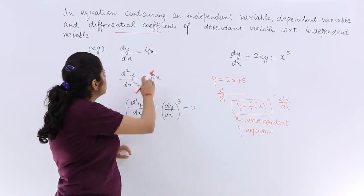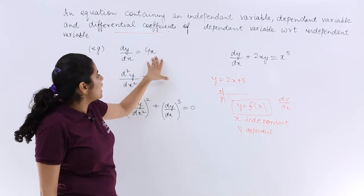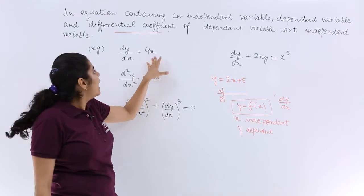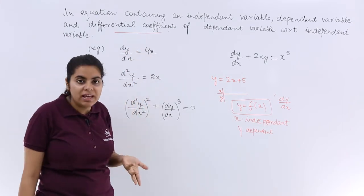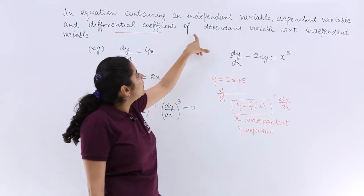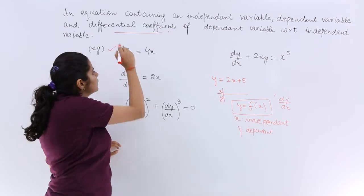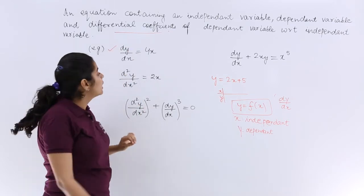Let's take these examples. This is dy by dx equals 4x. It contains x as the independent variable and dy by dx is already there. That dy by dx is differential coefficient of independent and dependent. Dependent with respect to independent. So this is a differential equation.